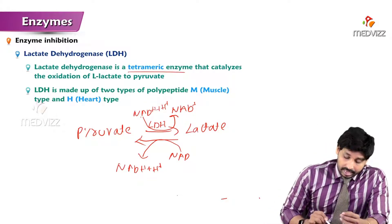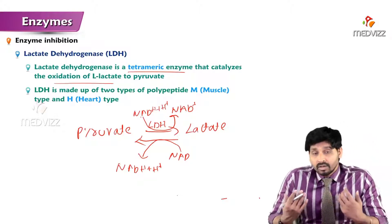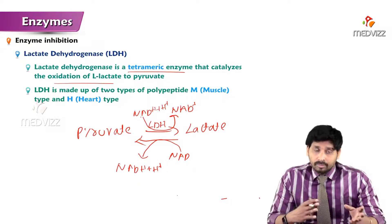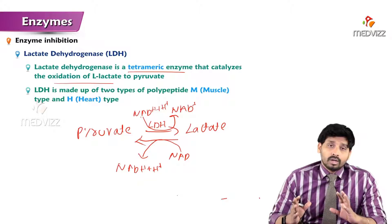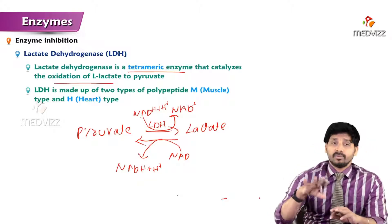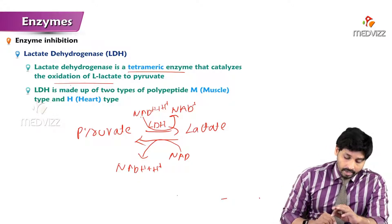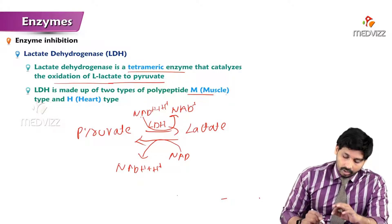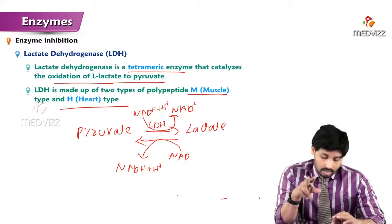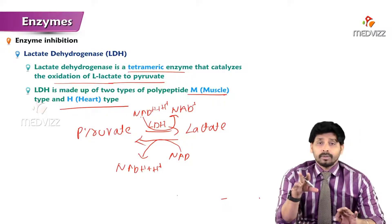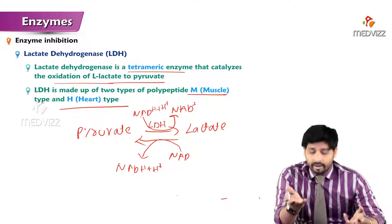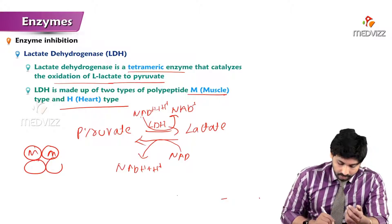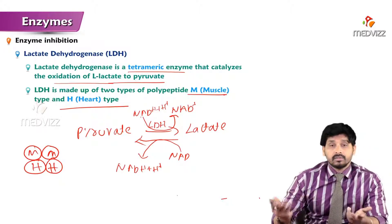Lactate dehydrogenase is a tetrameric enzyme that catalyzes the oxidation of lactate to pyruvate. Tetrameric means it is made up of four polypeptide chains - one polypeptide is a monomer, and more than one is an oligomer. LDH is made up of two types of polypeptides: M type and H type, two of each, giving us a tetramer with composition MMHH.